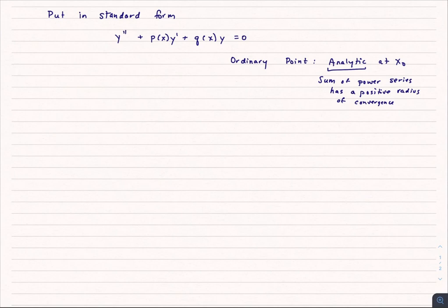If it's not an ordinary point, it means it's a singular point. And when I said analytical at x0, what I specifically mean are that p(x) and q(x) are analytical. So let's see a quick example.